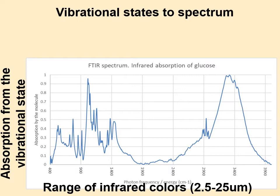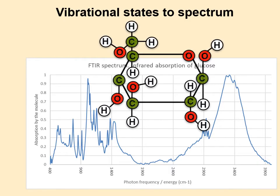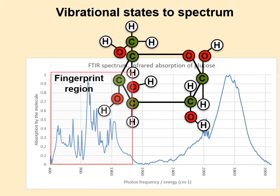We have absorption drawn as a positive peak, and every peak represents an absorption by the molecule — it's a vibrational state. Those are all the vibrational states we see. Bringing the molecule back: it has a lot of different ways it can vibrate, and that creates the fingerprint region on the left-hand side of the spectrum.